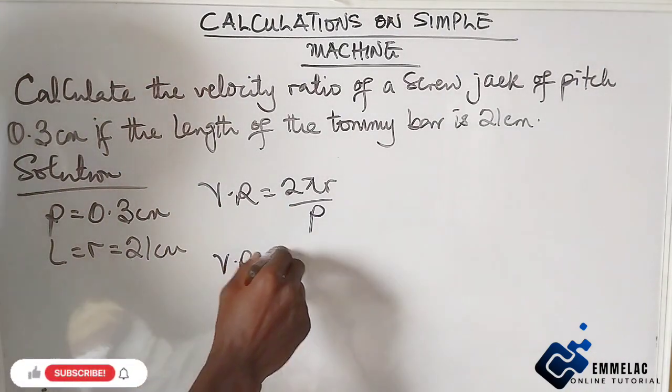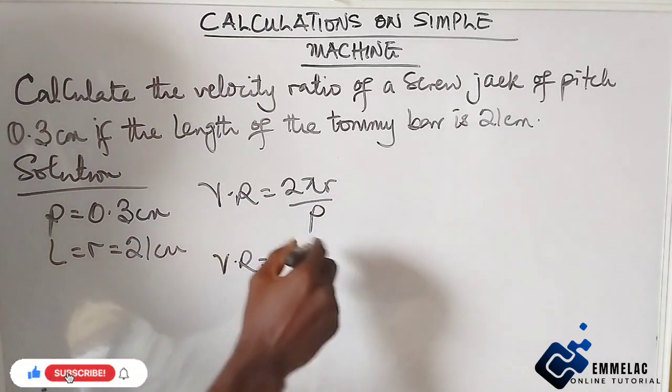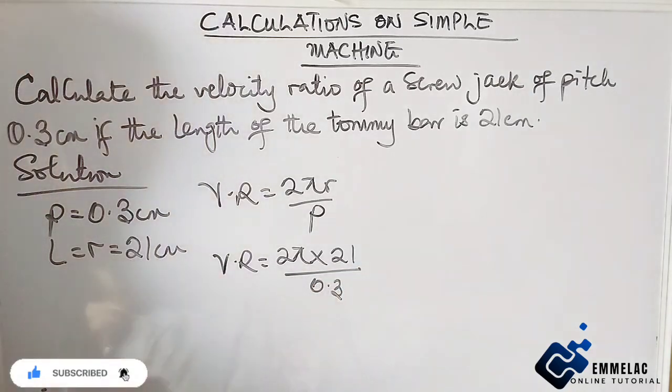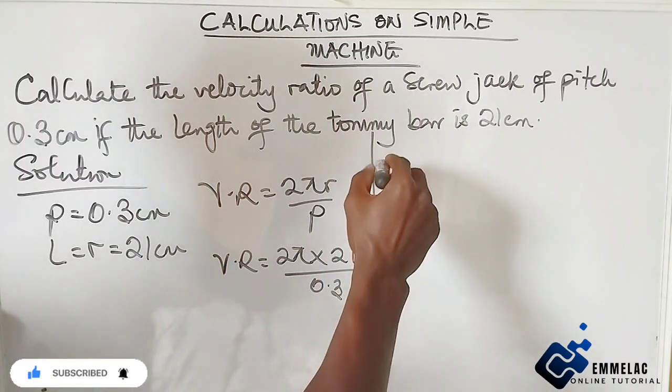Our velocity ratio will now be 2π times the radius, which is 21, over 0.3.